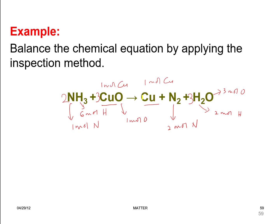But now copper is unbalanced, so we place a coefficient of 3 before copper on the product side. Rewriting: 2 moles of ammonia plus 3 moles of copper oxide produces 3 moles of copper solid plus 1 mole of nitrogen gas plus 3 moles of water. Counter-check: left has 2 nitrogen, right has 2 nitrogen; left 3 copper, right 3 copper; left 6 hydrogen, right 6 hydrogen; left 3 oxygen, right 3 oxygen. The equation is balanced.